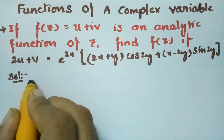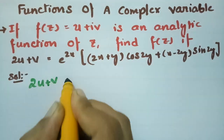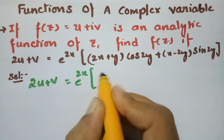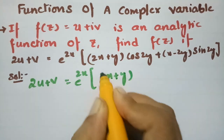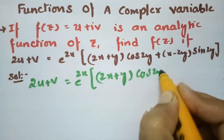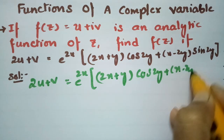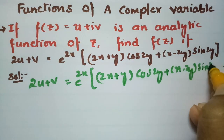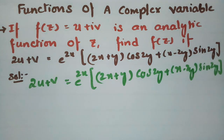So here what is given: 2u + v is given as e^(2x) times (2x + y)cos(2y) + (x - 2y)sin(2y).